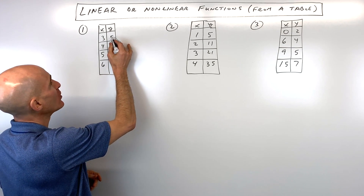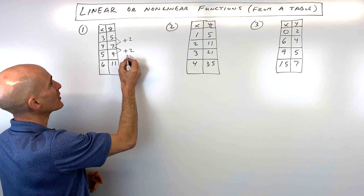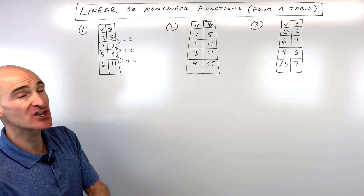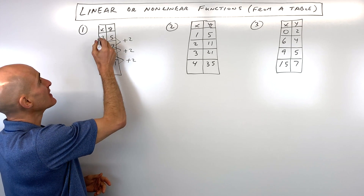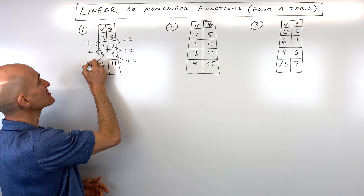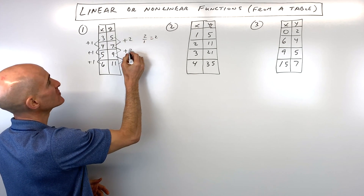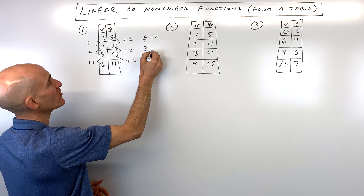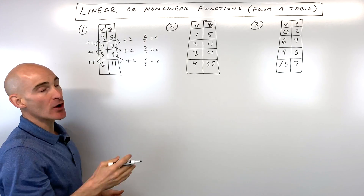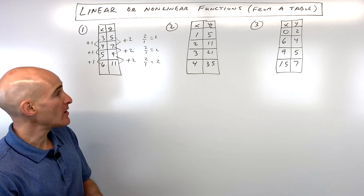Looking at example one, the y-values are going up by two — seven to nine is two, nine to eleven is two. The x-values are increasing by one each time — five to six is one. So if we take two divided by one, that gives us a slope of two, every time. You can see it's always going up at that constant rate with a slope of two.